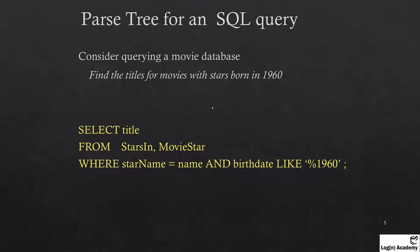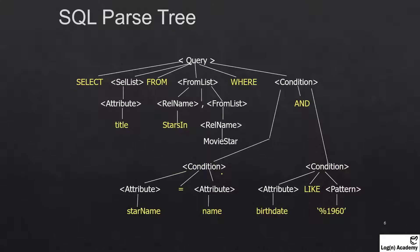For example, consider a simple case: find the title of movies with stars born in 1960. For this we have a query selecting one field from two tables with a WHERE clause and an AND operator. Now how can a binary tree help us parse this? The SQL engine, when it evaluates that query, will form a parse tree something like this.